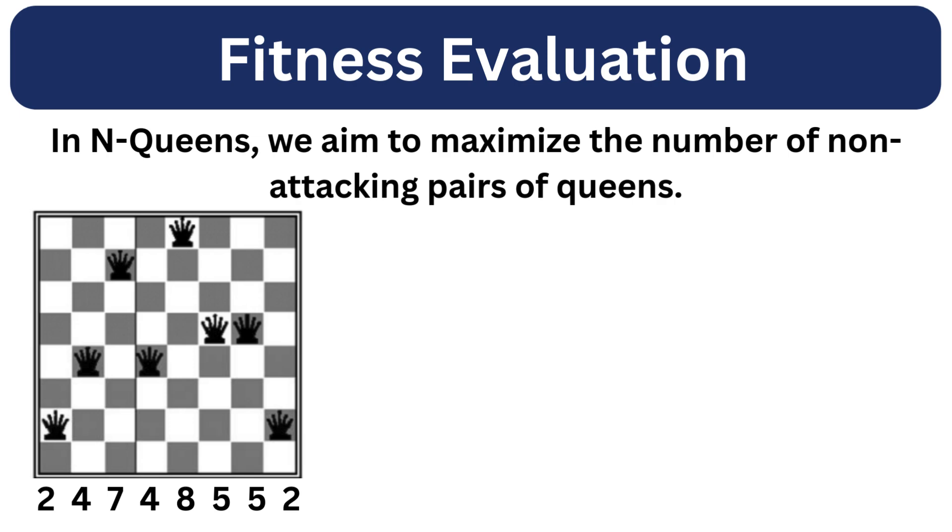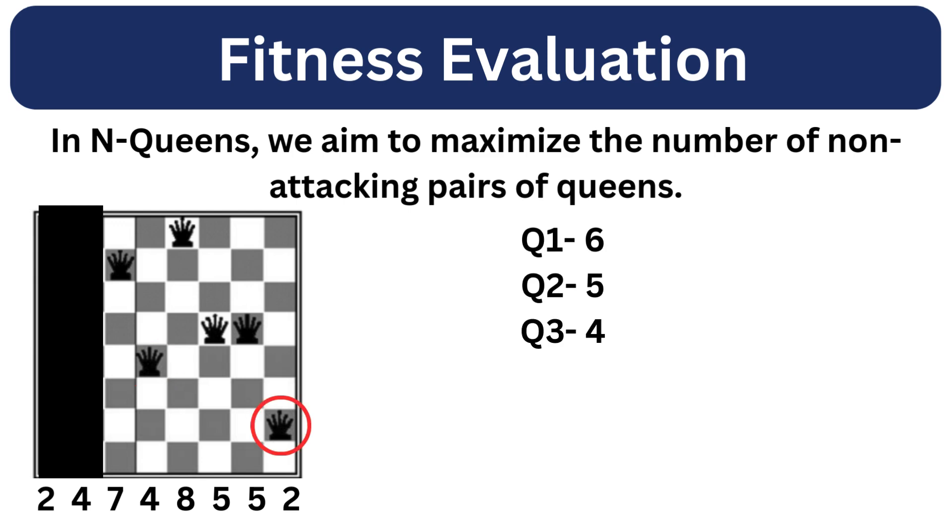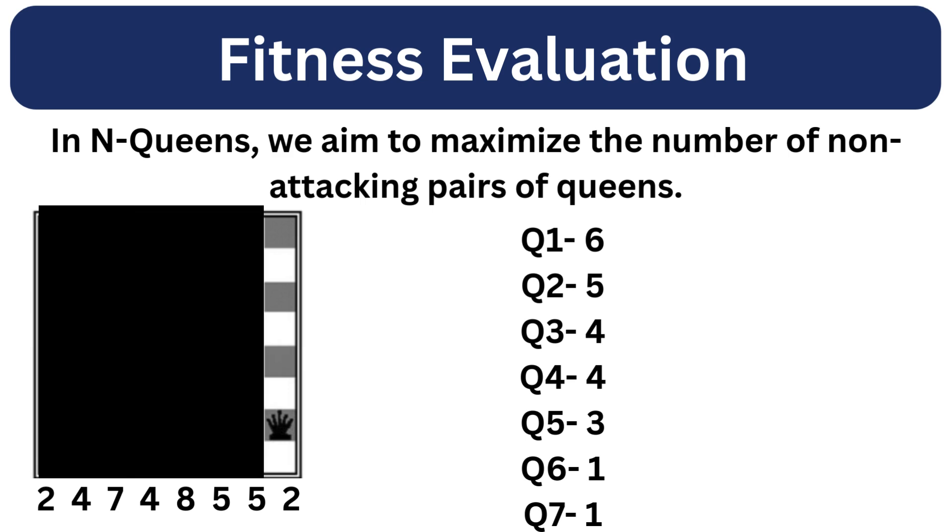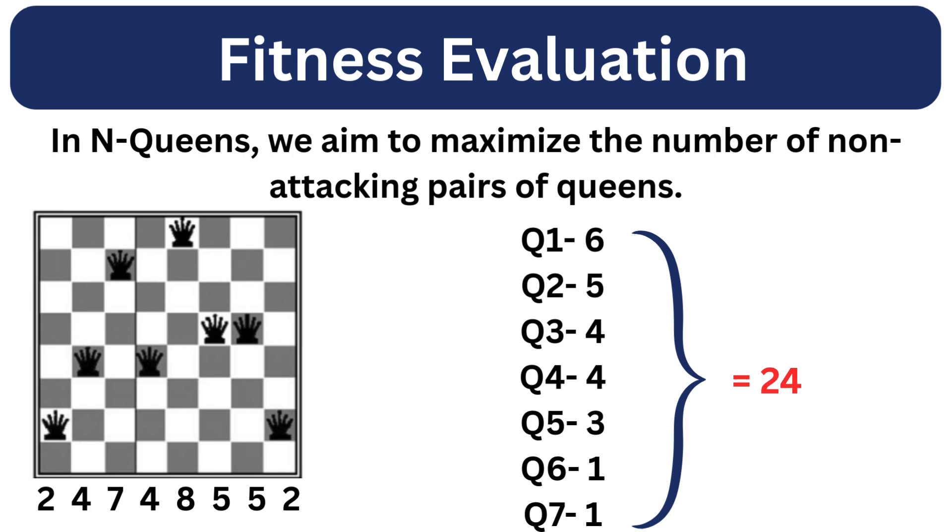In N-queens, fitness is about non-attacking pairs. More non-attacking pairs, better solution. If we check the queen in the first column with the rest of the queens, it is only attacking the queen in the last column. So there are 6 non-attacking pairs. Let's check for the second queen. It is attacking the queen in the fourth column. So there are 5 non-attacking pairs with the second queen. Let's check the third queen. It is attacking the last queen. So there are 4 non-attacking pairs. Fourth queen is not attacking anyone. Similarly, for the fifth queen, there are 3 non-attacking pairs. For sixth and seventh, there is one non-attacking pair. Adding them all up, you get a fitness score of 24 for this solution.